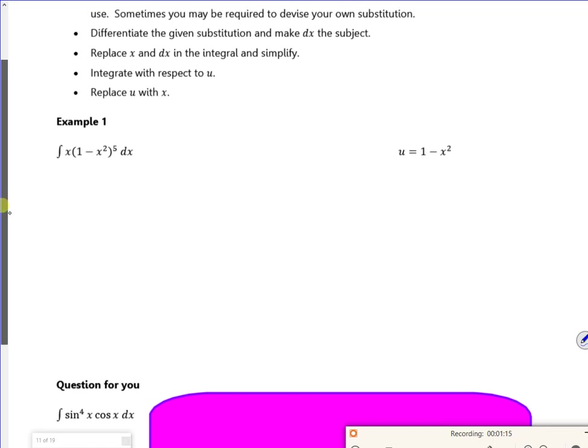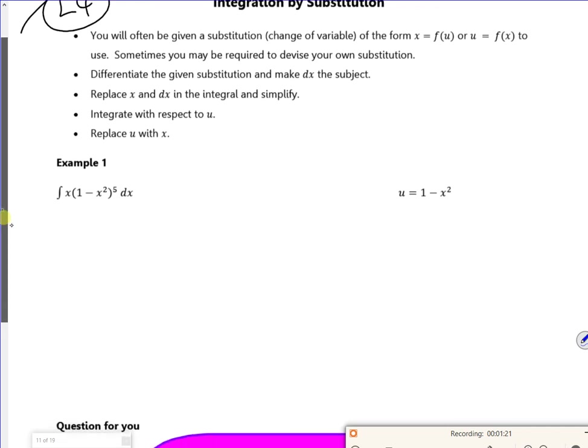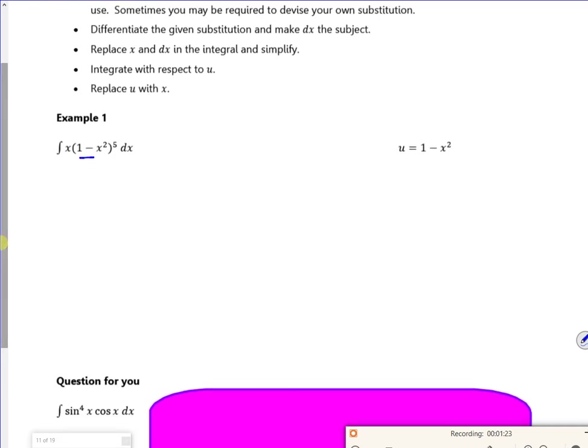Right then. So let's have a look. So it says, differentiate the substitution and make it. So it tends to be that the substitution is a bit in the bracket there. So u is 1 minus x squared. And differentiate it, so du/dx, minus 2x.